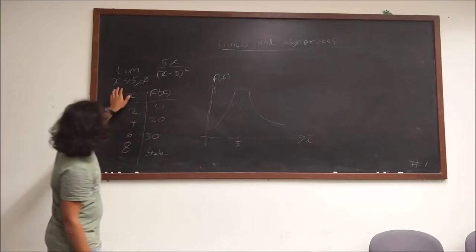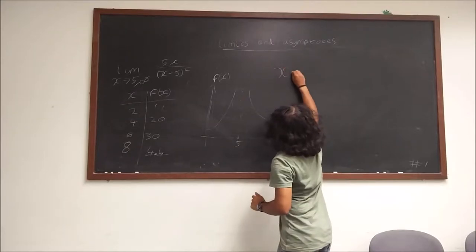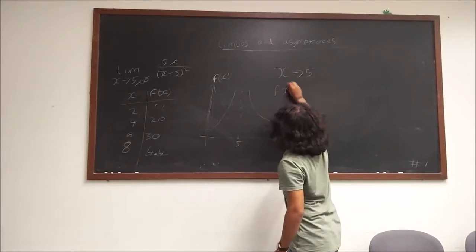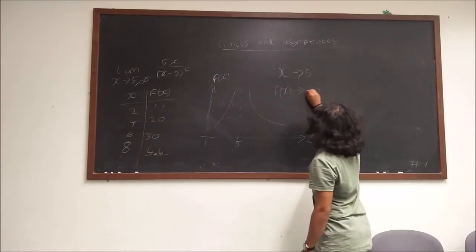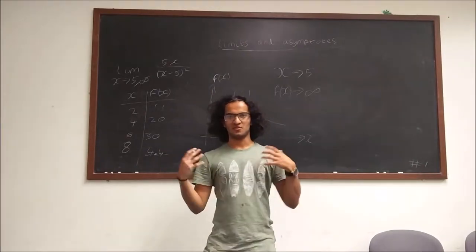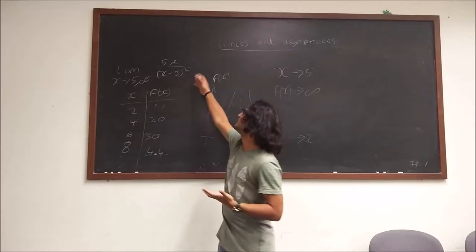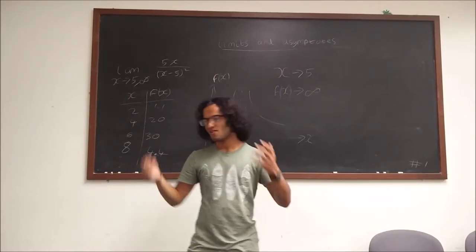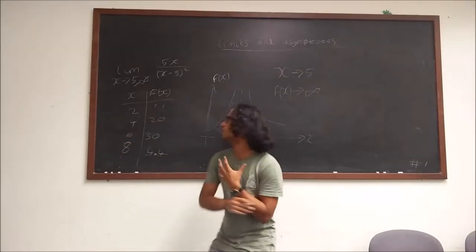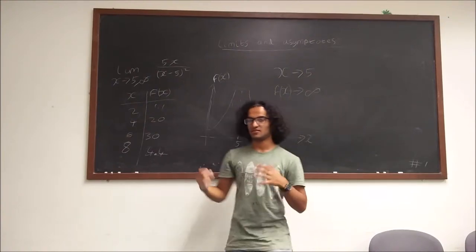We know that when x becomes 5, the bottom fraction will equal 0 because 5 minus 5 is 0, so our denominator will be 0 and f of x will tend to infinity. So as x tends to 5, f of x tends to infinity. Generally in limits, it's not really useful to say this equals infinity since infinity is undefined, so we tend to say the limit is undefined as well.